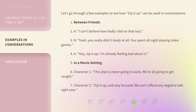Let's go through a few examples to see how "zip it up" can be used in conversations. First, between friends — A: "I can't believe how badly I did on that test." B: "Yeah, you really didn't study at all. You spent all night playing video games." A: "Hey, zip it up. I'm already feeling bad about it."